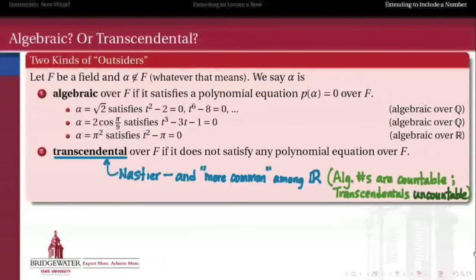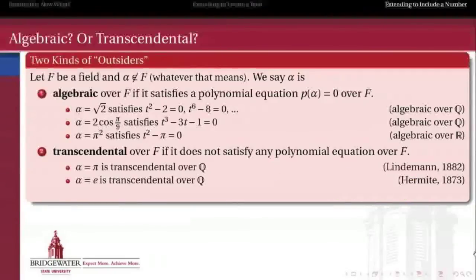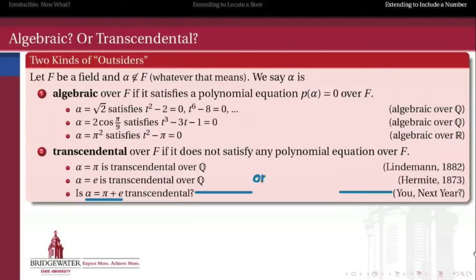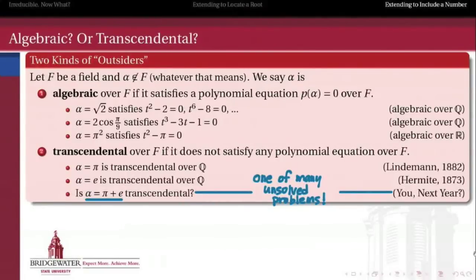What are some examples of transcendental numbers over the rationals? How about pi and e? It turns out it's not a trivial thing at all to prove that pi and e are transcendental — those proofs only came along in the 19th century. And what's perhaps even more surprising is that if we take pi and e and combine them — even something as simple as adding them together — the question of whether pi plus e is transcendental remains open as of the making of this video. It's one of many unsolved problems in what's called the theory of transcendence.